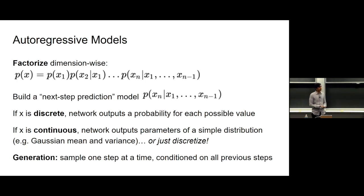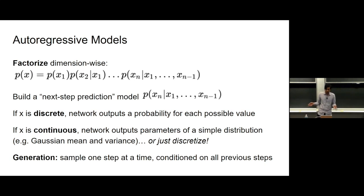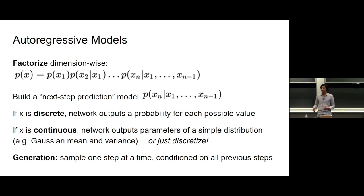For continuous spaces like images, the network can output parameters of a simple distribution like a Gaussian — outputting a mu and sigma. Alternatively, you can quantize continuous data into discrete buckets and use a softmax, which works surprisingly well. At generation time, sampling from an autoregressive model works by sampling the first dimension, then treating that sample as ground truth to sample the second dimension, then the third, continuing in a chain until completion.